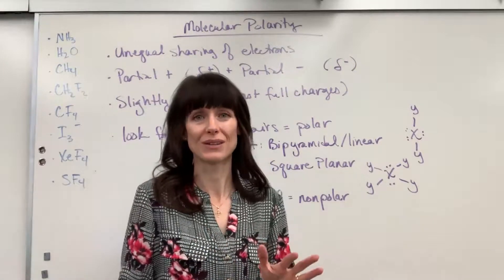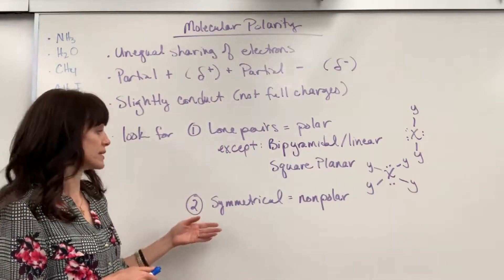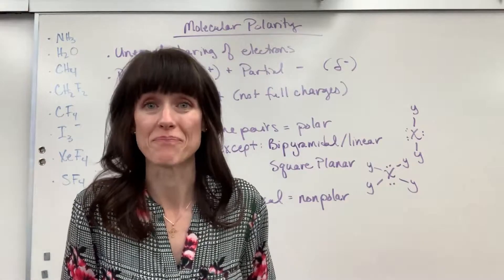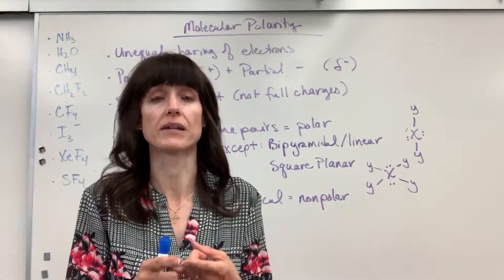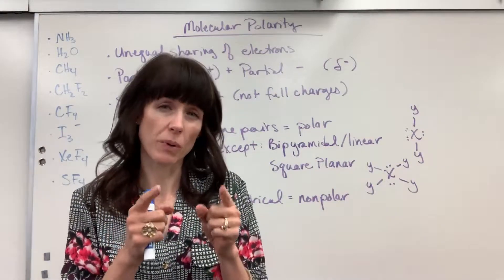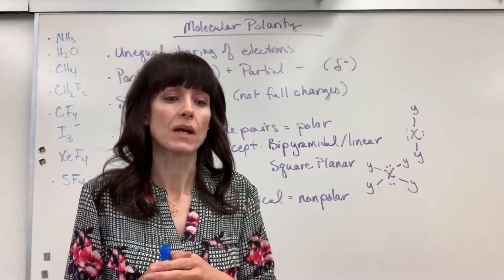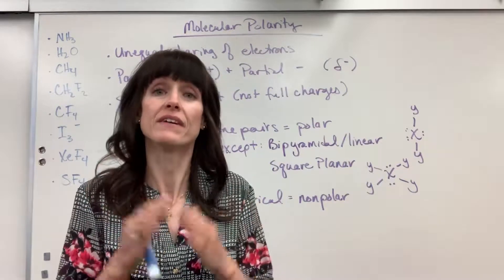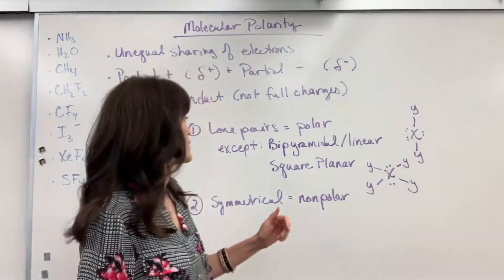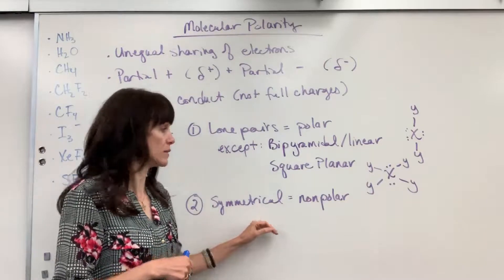Now, if there are no lone pairs — all bonds — the second thing you look for is symmetry. What I mean by that is simply: are all the substituent atoms surrounding that central atom the same? If they're the same, it doesn't matter whether each individual bond is polar or non-polar. If all the atoms are the same — if it's symmetrical — then the molecule is non-polar. So: lone pairs → polar; symmetrical with all the same atoms around the central atom → non-polar.